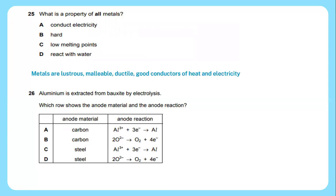Question 26: Aluminum is extracted from bauxite by electrolysis. Which row shows the anode material and the anode reactions? The answer will be: anode material will be carbon and the reaction will be 2O2 negative to produce O2 plus 4E negative.